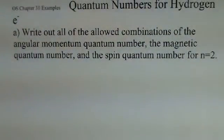Professor Clements with you as we do some more topics in Chapter 30 of OpenStax College Physics, looking to write out quantum numbers for hydrogen electrons in the hydrogen atom. Our first task here: write out all of the allowed combinations of the angular momentum quantum number, the magnetic quantum number, and the spin quantum number given that n equals 2, that the principal quantum number is equal to 2.